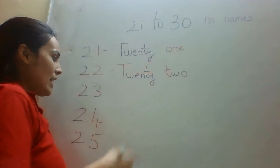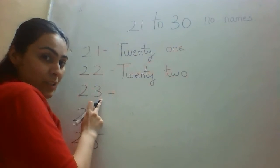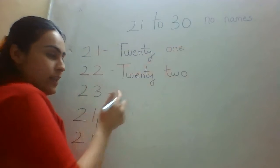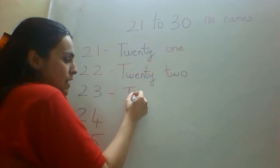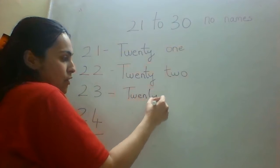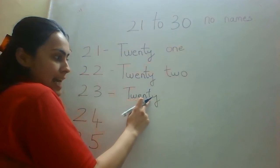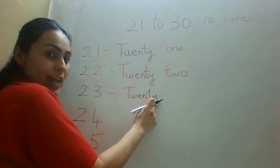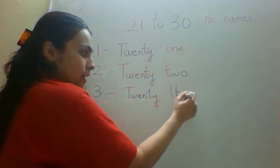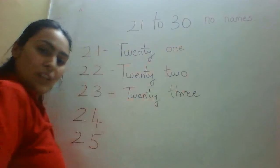So it is going to be twenty-two. Then we have 23. This is 23. So again, 20 spelling is already written. This is the spelling of 20: T-W-E-N-T-Y. And here it is going to be 3: T-H-R-E-E.